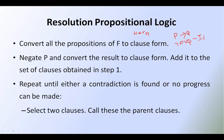Next, negate P and convert the result to the clause form, then add it to the set of clauses obtained in step 1. Repeat this step until a contradiction is found. Suppose you want to prove P, you have to start with negation P. Suppose you want to prove Rama is a good boy, you have to start with Rama is a bad boy. Then finally you can conclude that Rama is a good boy, and you repeat this procedure till you find the contradiction — that means the empty clause is found and no progress can be made. This is the resolution in propositional logic.